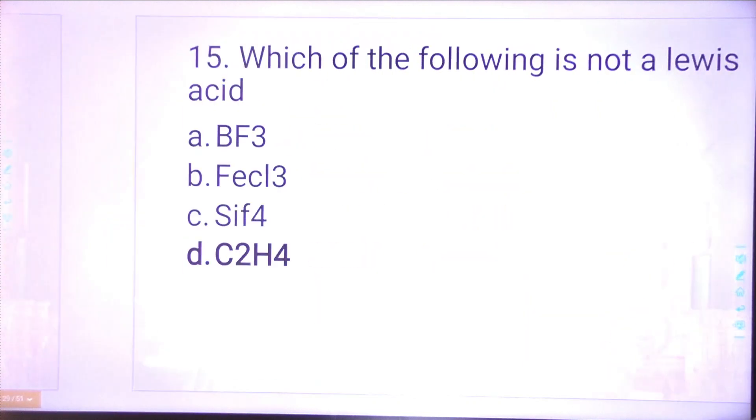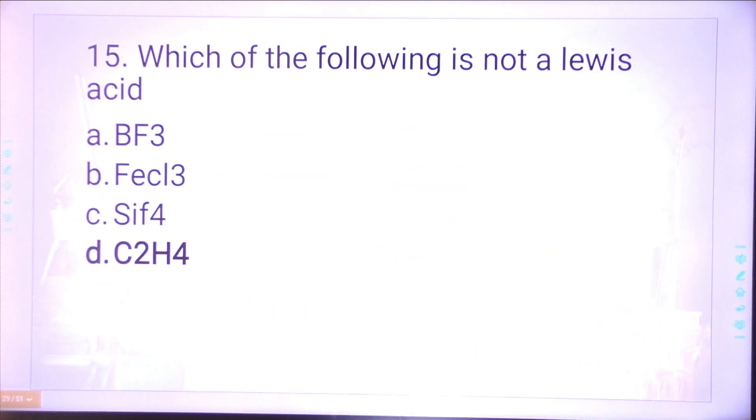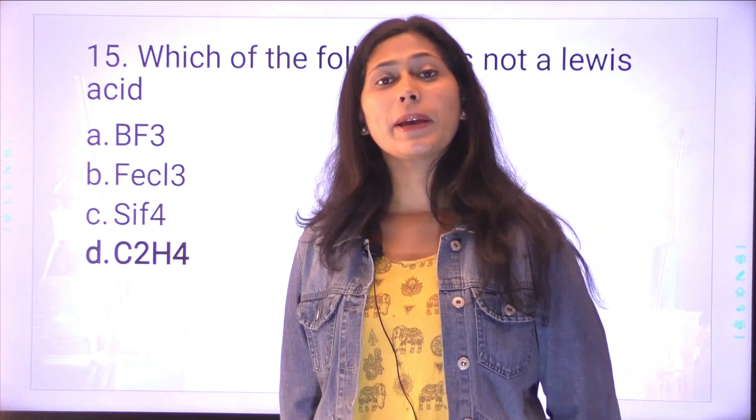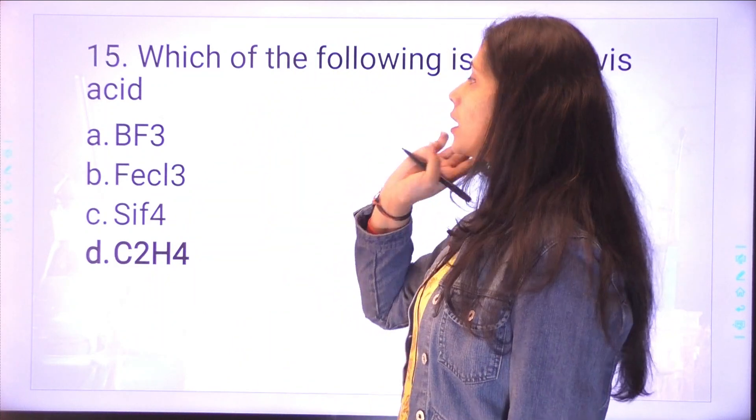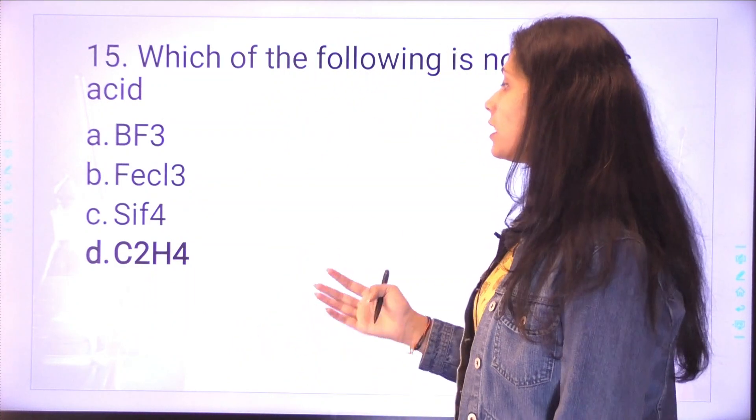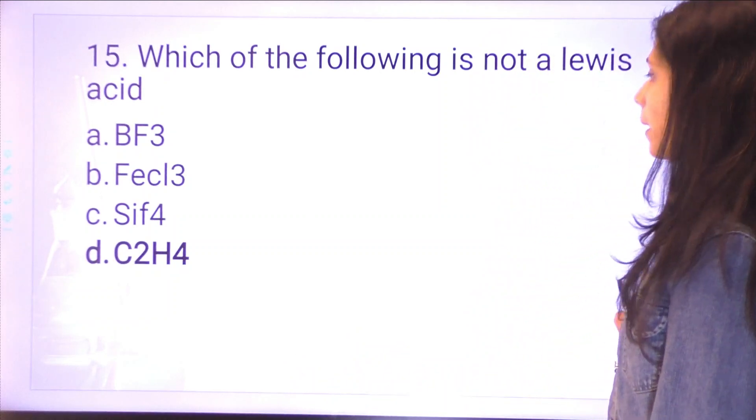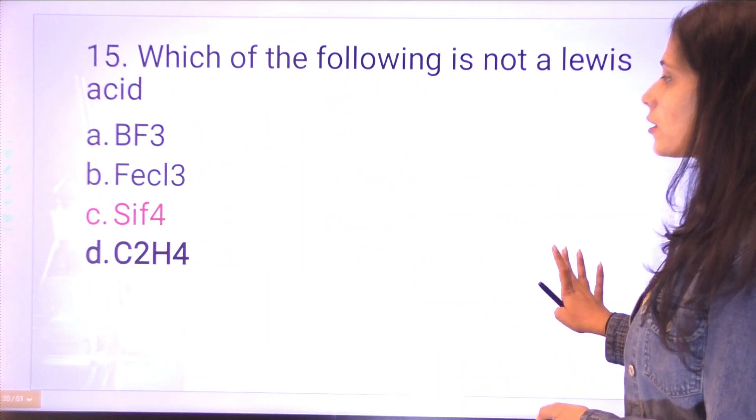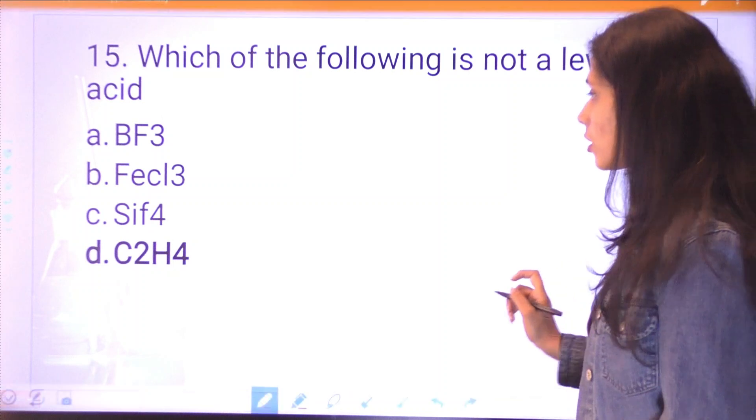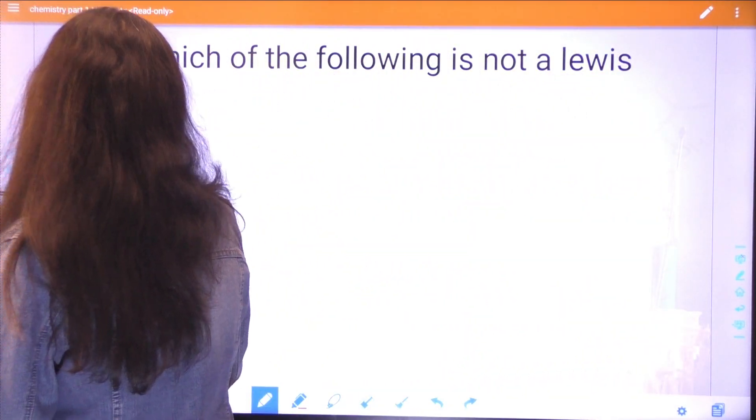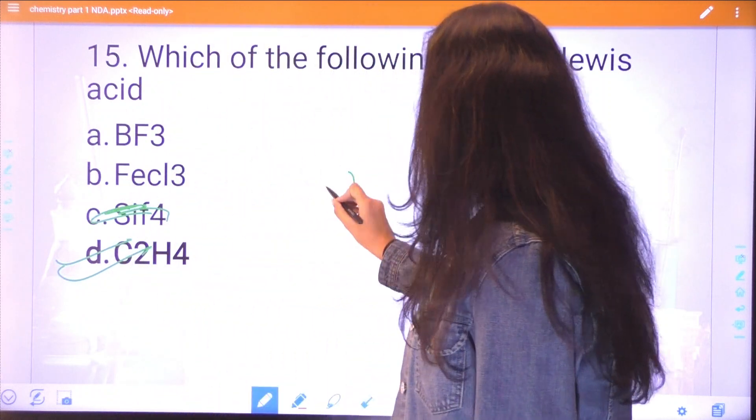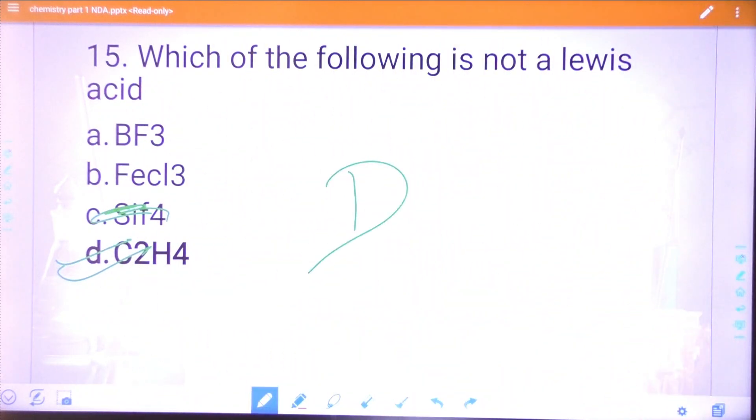You will see in the ionization chapter many questions come. Temperature, concentration, types of solvent, or current - which does not affect ionization? The correct answer is current, because current has no relation to ionization. Question fifteen: which of the following is not a Lewis acid? C2H4 is not the Lewis acid.